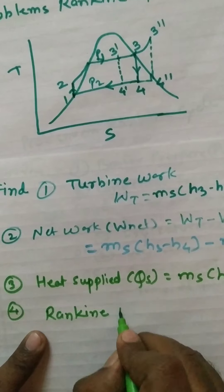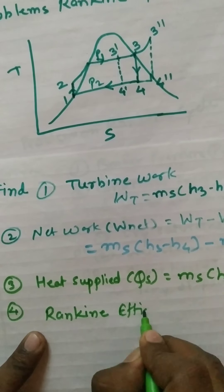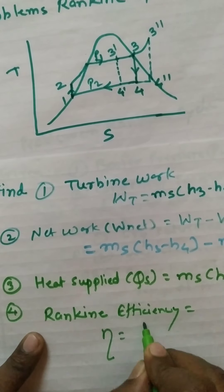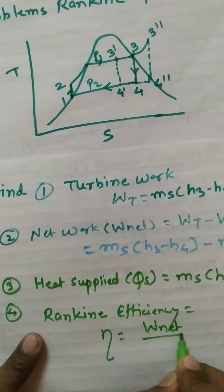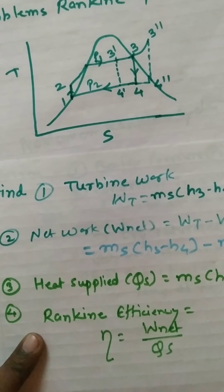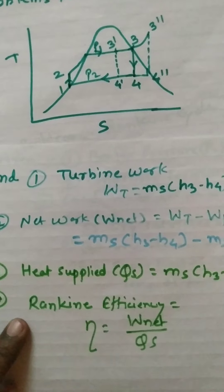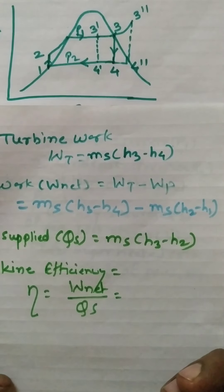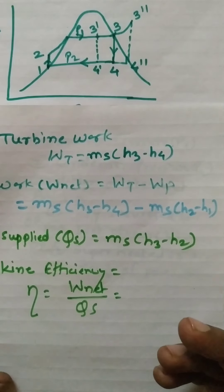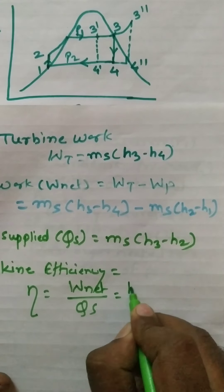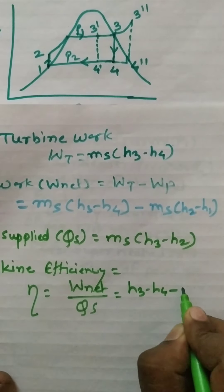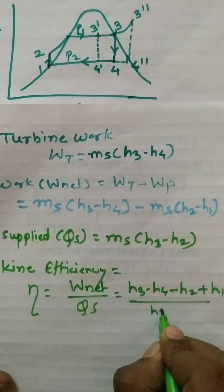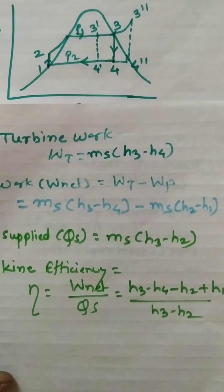The fourth parameter very commonly asked is Rankine efficiency, which equals net work divided by heat supplied. So Rankine efficiency = (H3 - H4 - H2 + H1) / (H3 - H2).